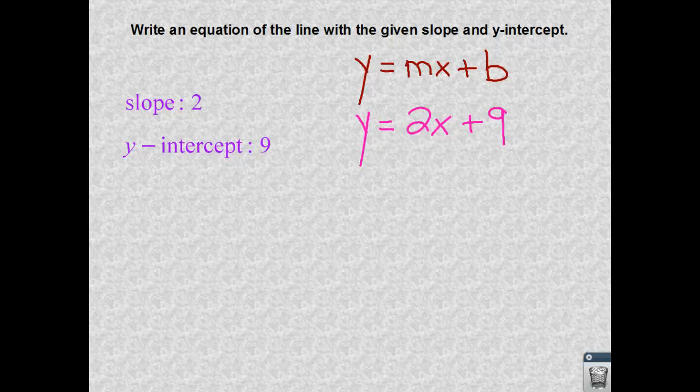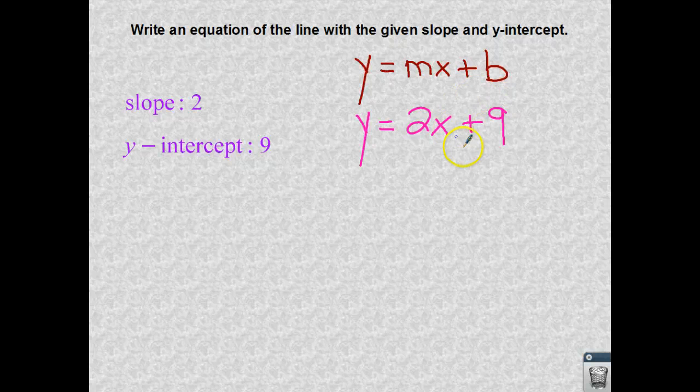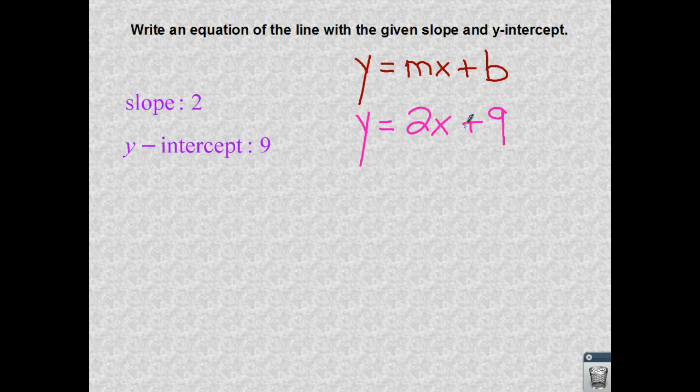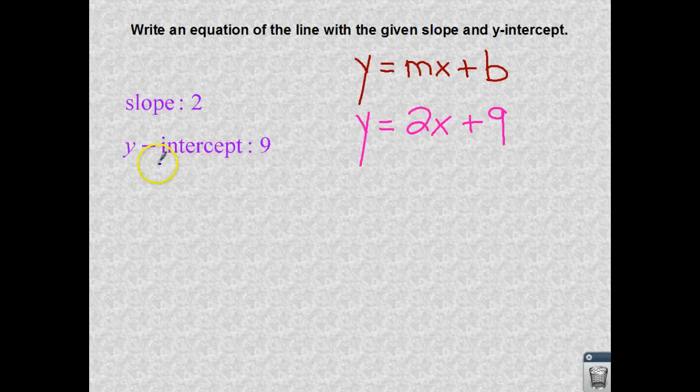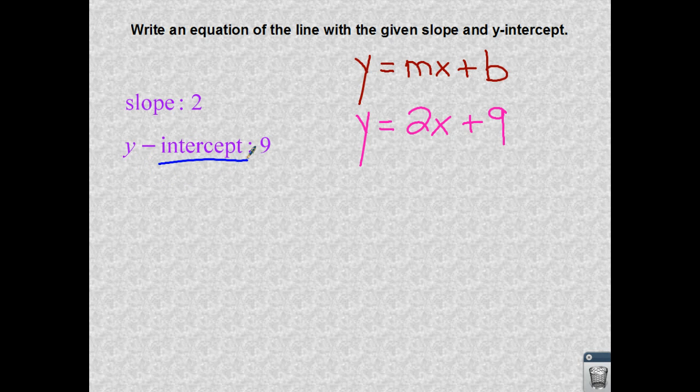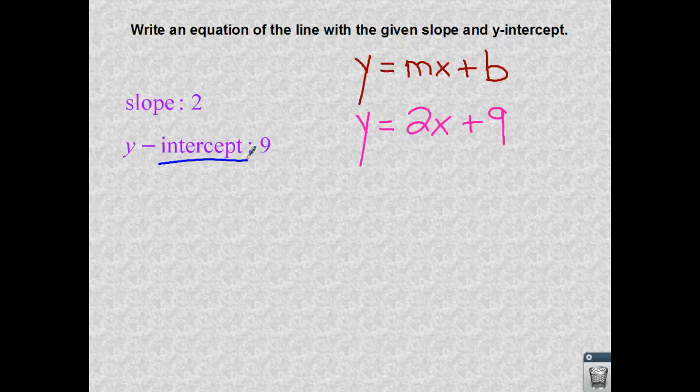One special note that I want you to know, the y-intercept 9 is not the y value. So if you're looking over here, we have this y equaling. That is just the y coordinate of an ordered pair. It is not the intercept where it's going to be crossing your y-axis. So try not to mix those up.